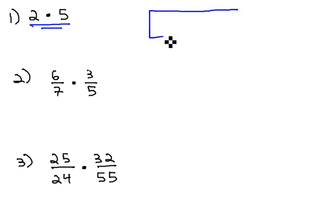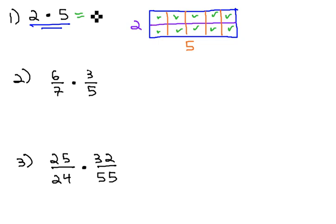You may recall that multiplication of whole numbers can be thought about as the area of a rectangle, 2 times 5. That's 2 units high and 5 units long. When we count up the boxes, we find out that 2 times 5 is, indeed, 10 little boxes.